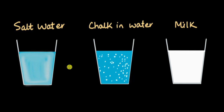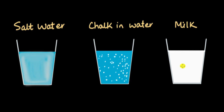We have three mixtures in front of us: salt water, chalk in water, and milk. Can you categorize these according to what you observe? You might be thinking we can categorize them as heterogeneous and homogeneous mixtures. The first mixture — salt water — is homogeneous, since salt easily dissolves in water. The other two are actually heterogeneous mixtures. We can see why chalk would be heterogeneous, but why is milk a heterogeneous mixture?